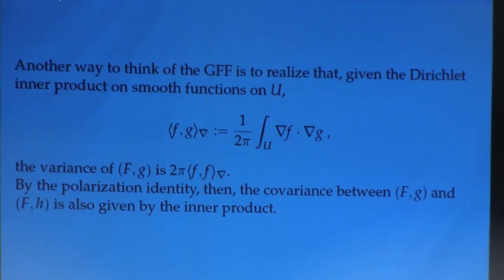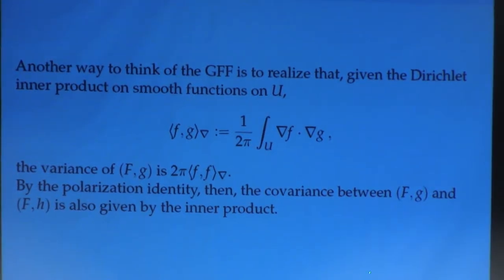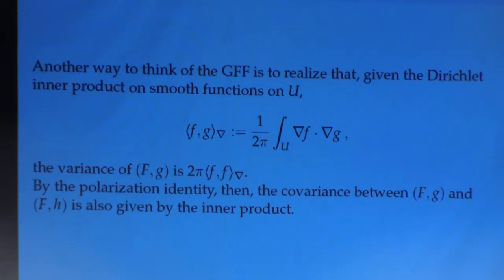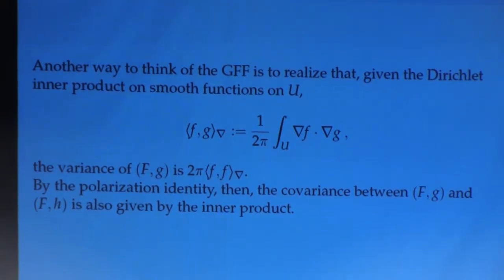It's an interesting fact, and you might go uh-huh when you see the problems in problem session later today. To have that, another way to actually think of this GFF is to realize that given the Dirichlet inner product on smooth functions on u, given by the gradient, the variance of Fg, so the variance of the Gaussian, the centered Gaussian variable that you get from the Gaussian free field when you plug in a function G, is going to be 2 pi times the inner product of F with F.